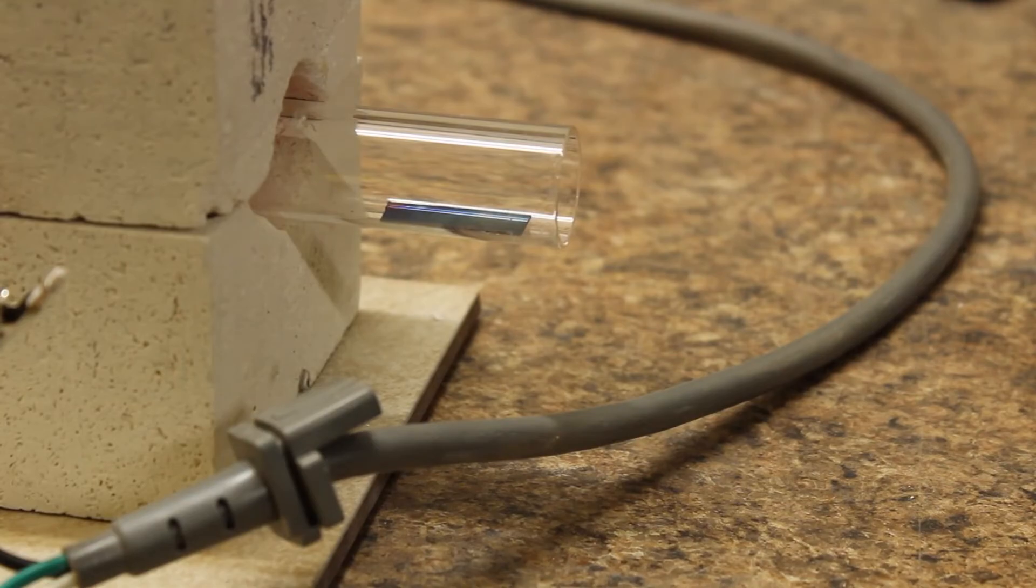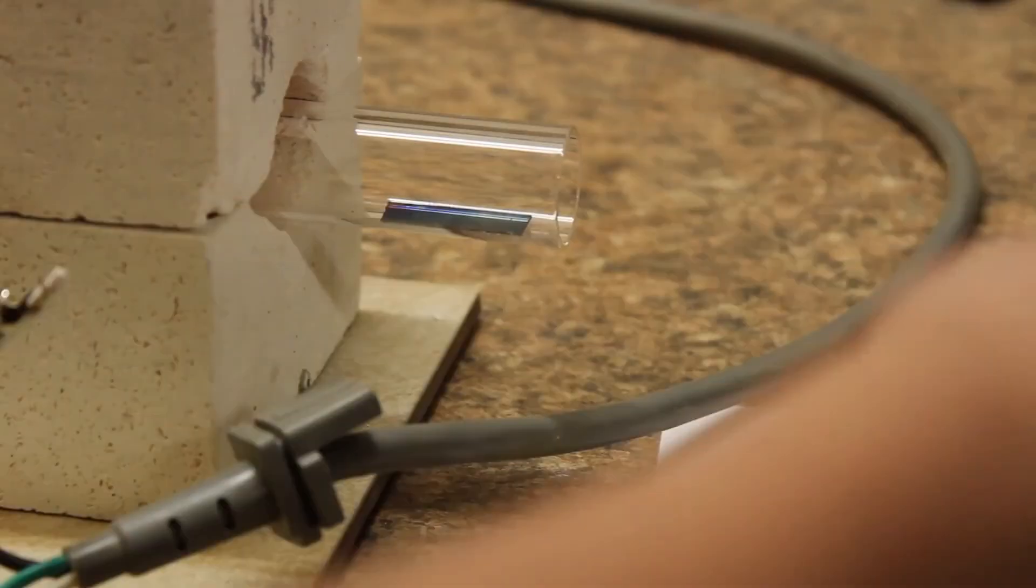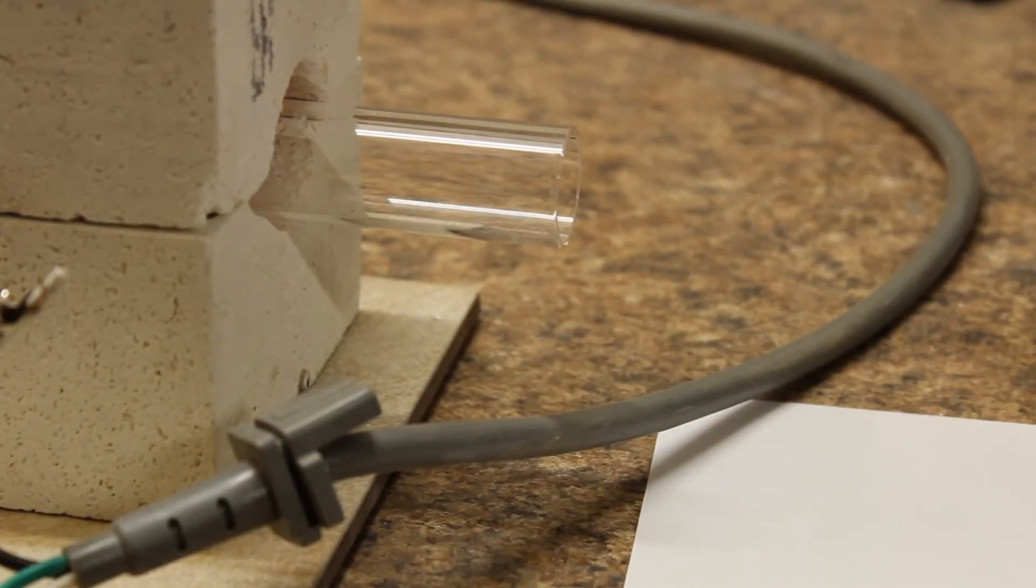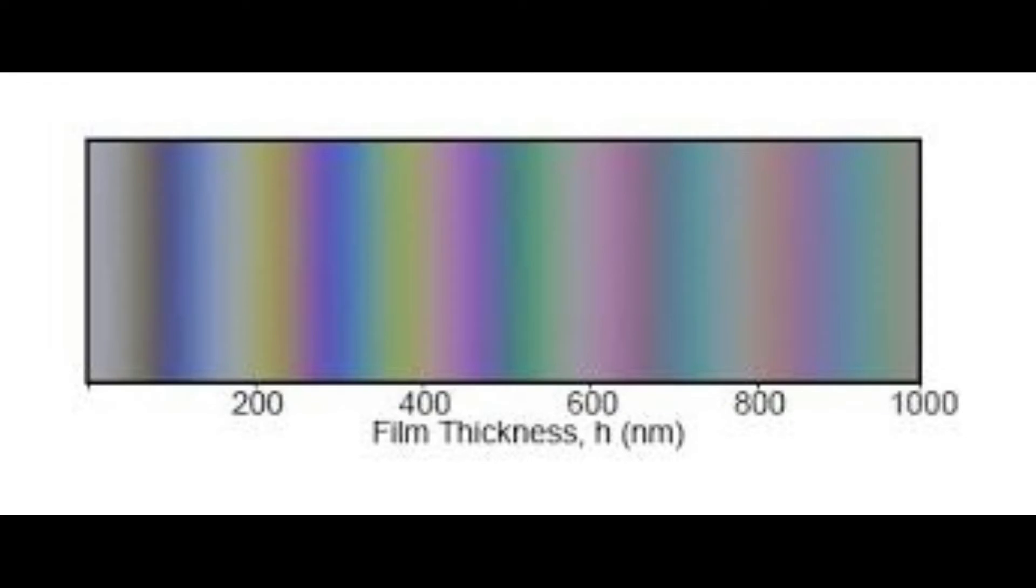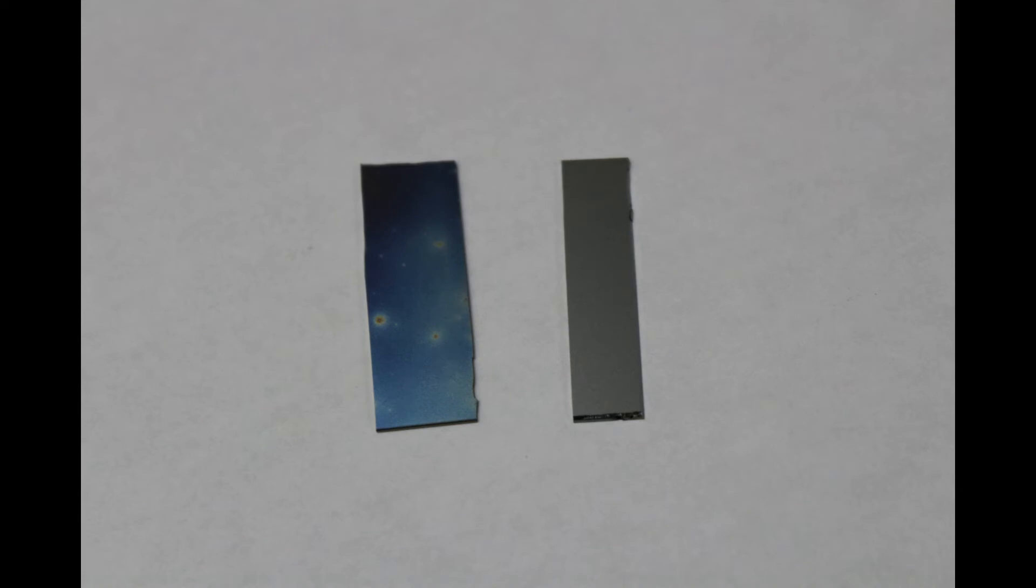We can tell the thickness of our oxide from the color. In the graph we can see there are three bands of blue in the 100, 300, and 500 nanometer range. We're going to be optimistic here and say it's probably 500 nanometers.